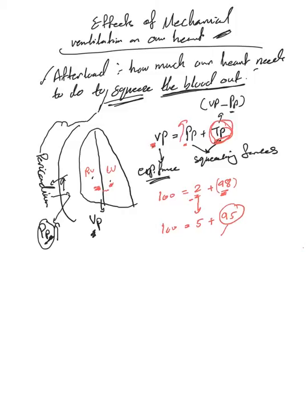So the ventricle needs to do work to produce this transmural pressure of 95 only, compared to here where it needs to produce 98. That means, and we're talking about the left ventricle mainly...